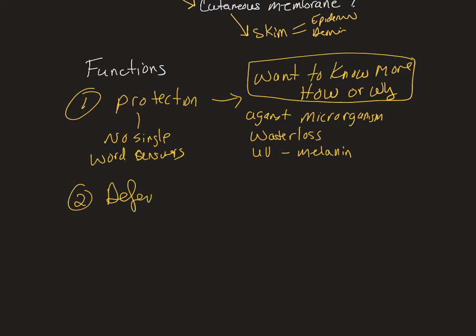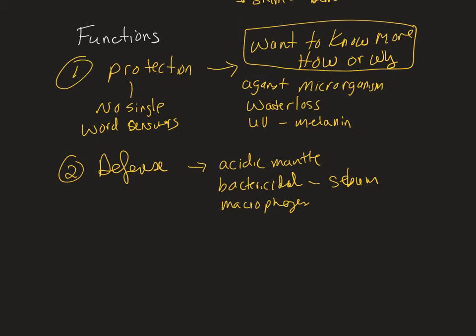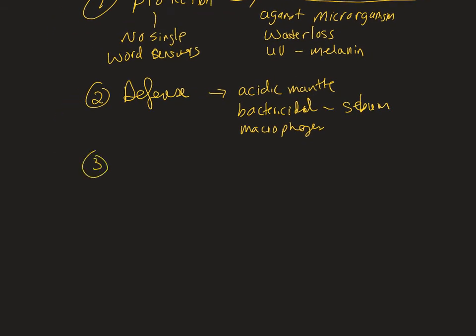Defense goes along with protection but works through specific mechanisms. There's the acidic mantle secreted by the sudoriferous glands, a bactericidal component in the sebum we secrete, and the dermis contains macrophages which help fight pathogens along with lymph nodes and other structures. Again, no single-word answers — explain how. Sensation is another function, with touch receptors that distinguish light touch, pressure, and pain.